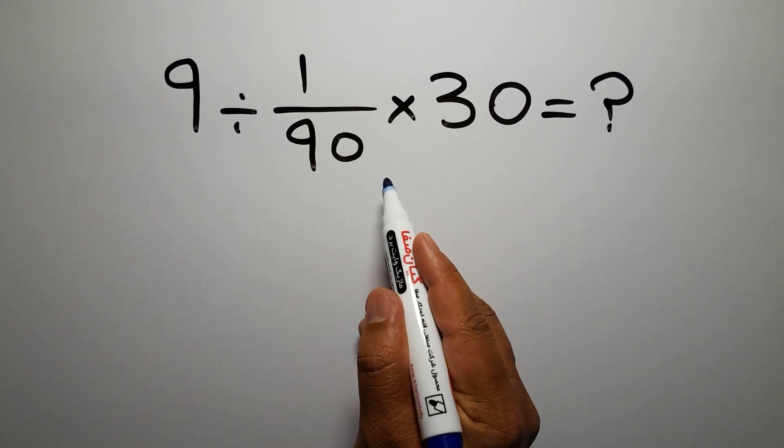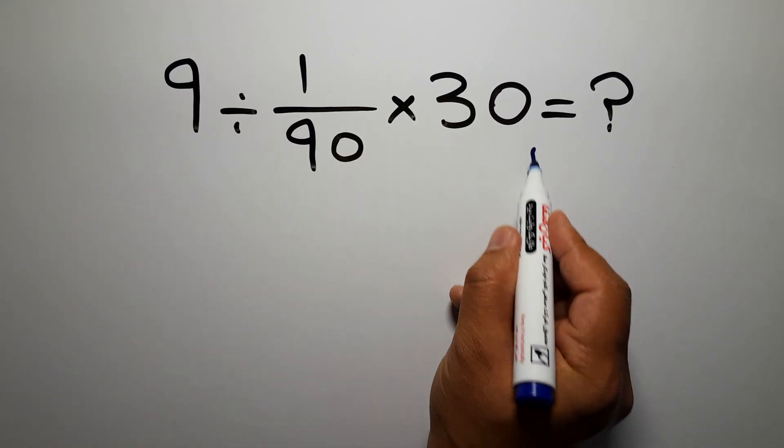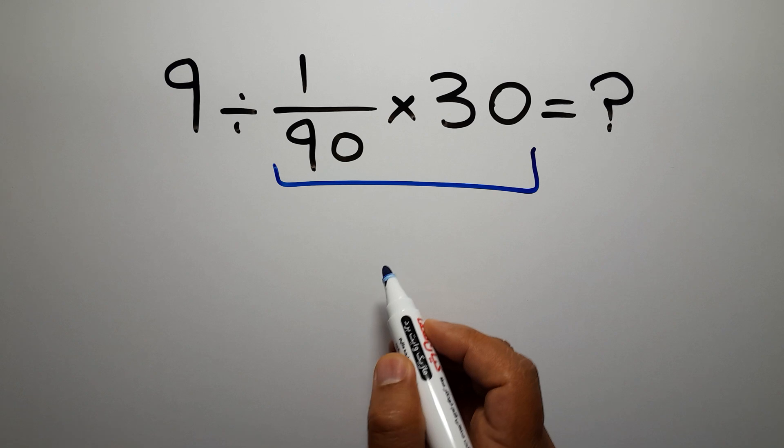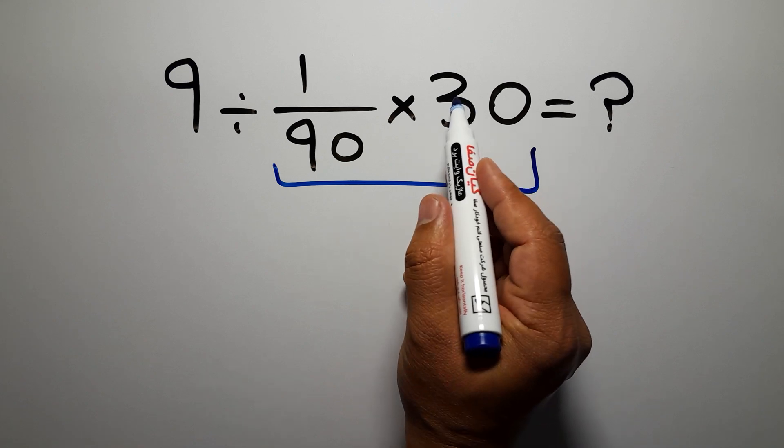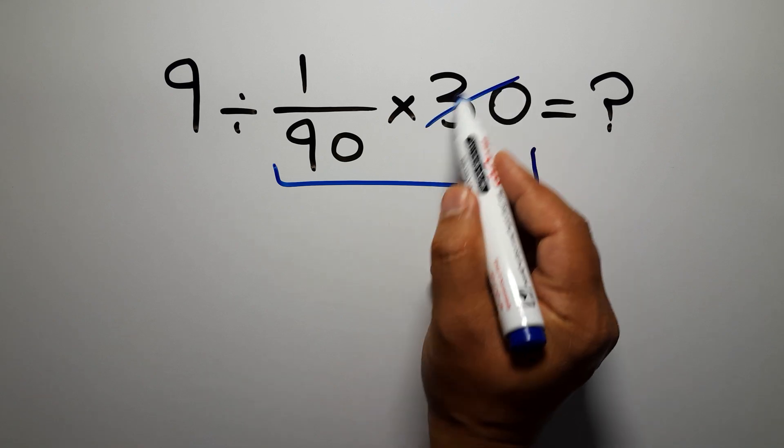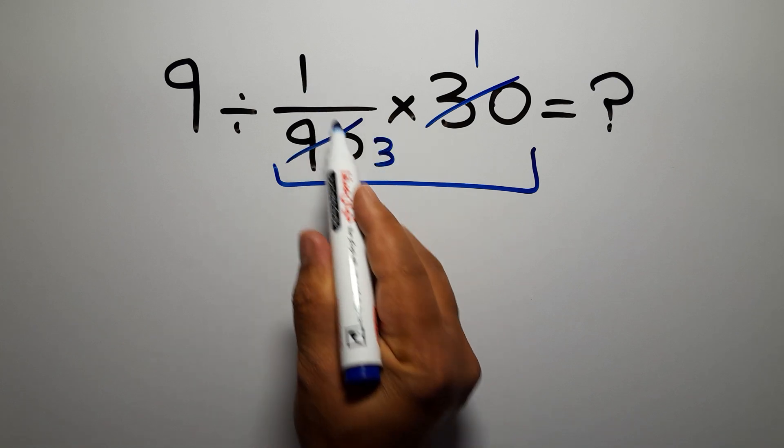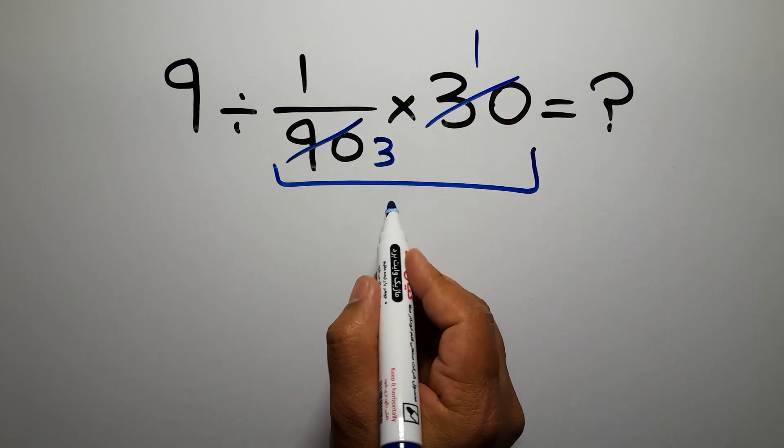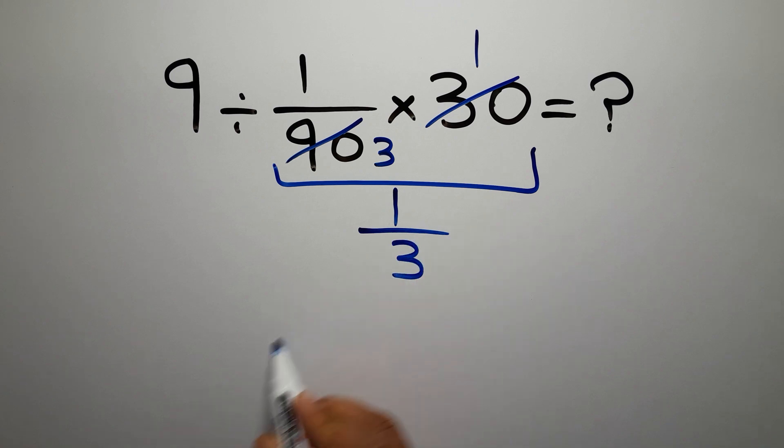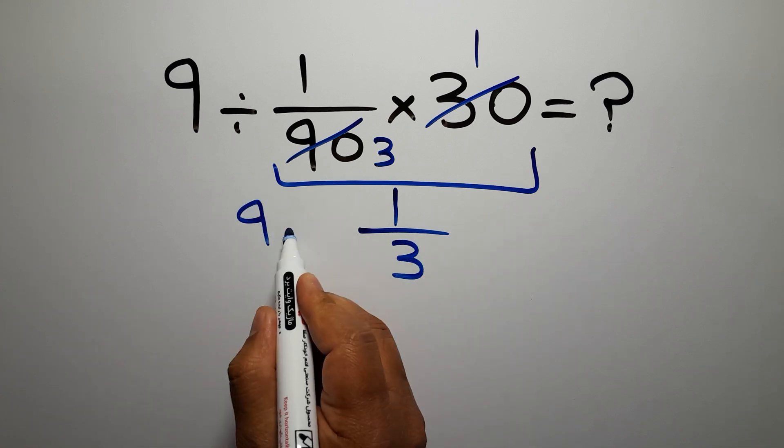First we do this multiplication: 1 over 90 times 30. 30 divided by 30 gives us 1, and 90 divided by 30 gives us 3, so 1 over 3 times 1 which equals 1 over 3. No, 9 divided by...